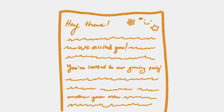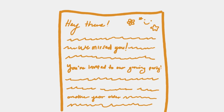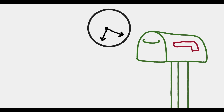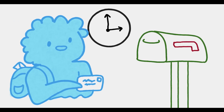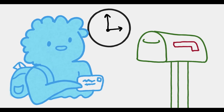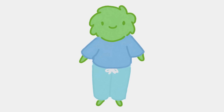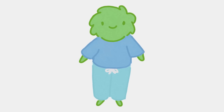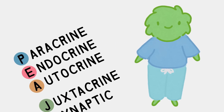Endocrine signaling is similar to sending your friends a letter in the mail. It takes time to be delivered, and when it is, your letter will pass by many people. But because the message isn't meant for them, none of them will act on it. When your friends receive the message, it will have a long-lasting impact on them, just like endocrine signaling with an organism. A good way to memorize the names of these five different types of signaling is to remember that cells love to work in their PJs because it helps get work done.